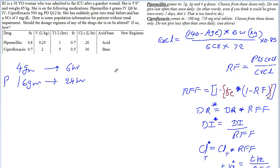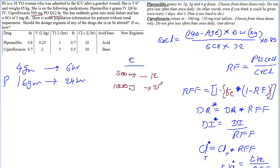She is also on Ciprofloxacin — 500 mg every 12 hours, which is 1000 milligrams every 24 hours. So the dose rates are: Piperacillin at 16 grams per day and Ciprofloxacin at 1000 mg per day.